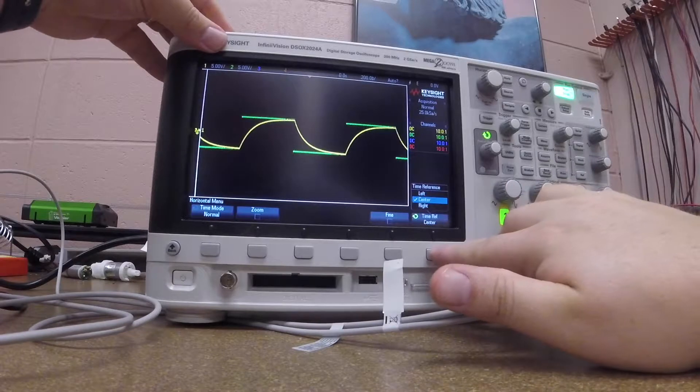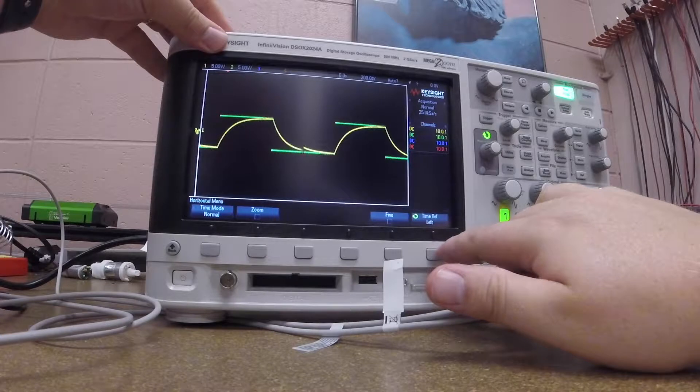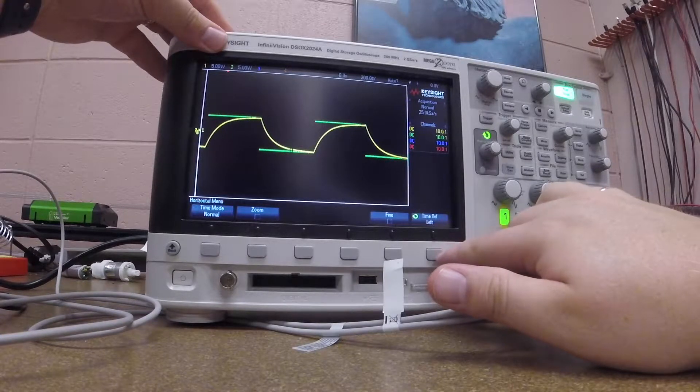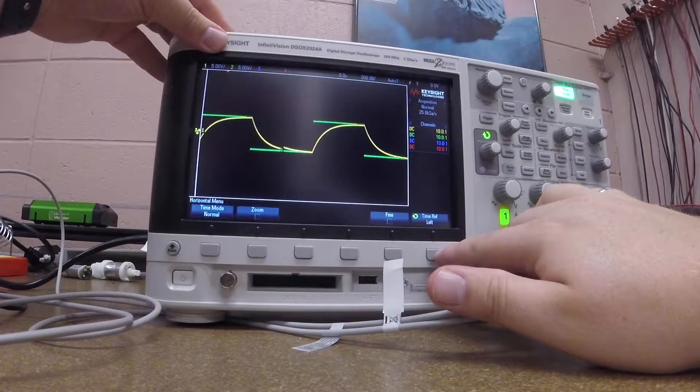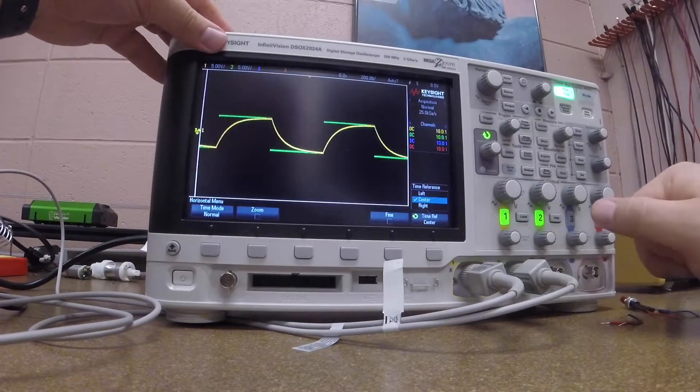I can also change my time reference to be left, right, or center. Under normal time mode, it'll look like this. It's really up to your own discretion to decide what works best for you. You can see the signal rolling through this way. I'm going to put it back at center for the purpose of the rest of this video.